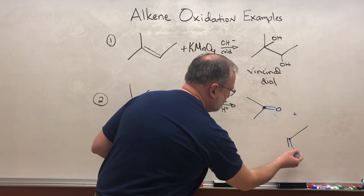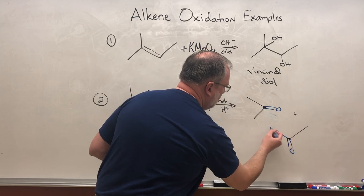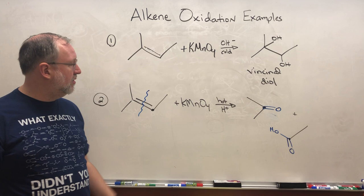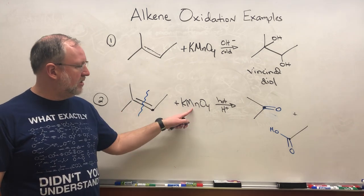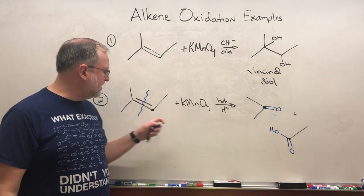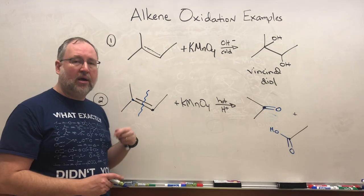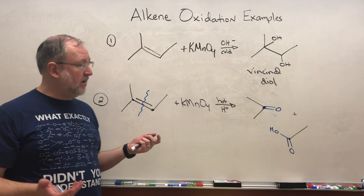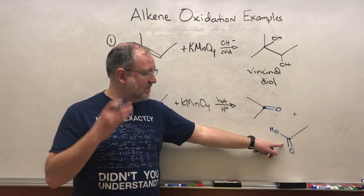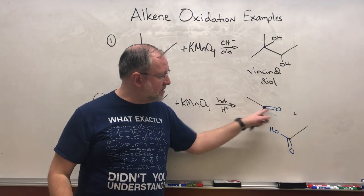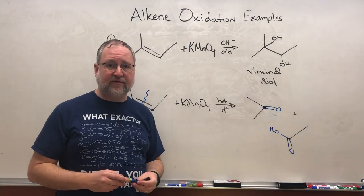This one actually can be oxidized all the way to the acid. So if you take an alkene, you have potassium permanganate and hot acid, you're going to rip that thing clean apart, and each of these carbons here and here are going to be oxidized, typically either to an acid if it ends up being primary after it's ripped apart, or to the ketone if it's secondary after it's been ripped apart.